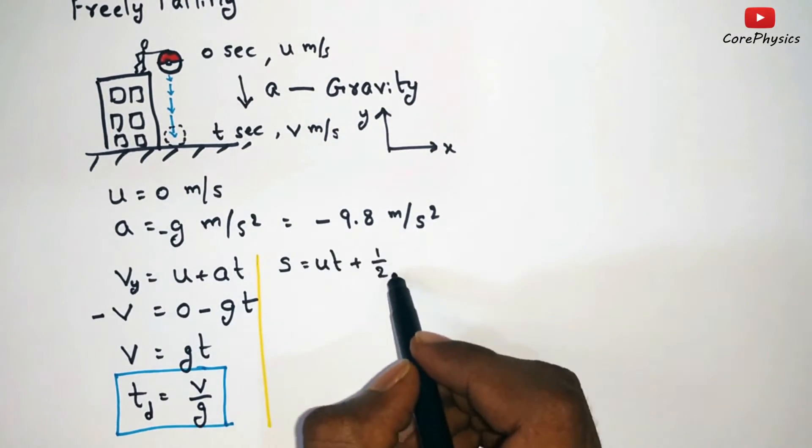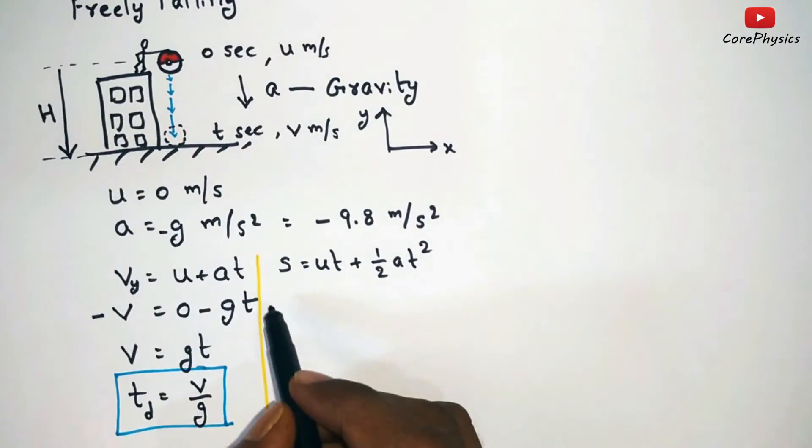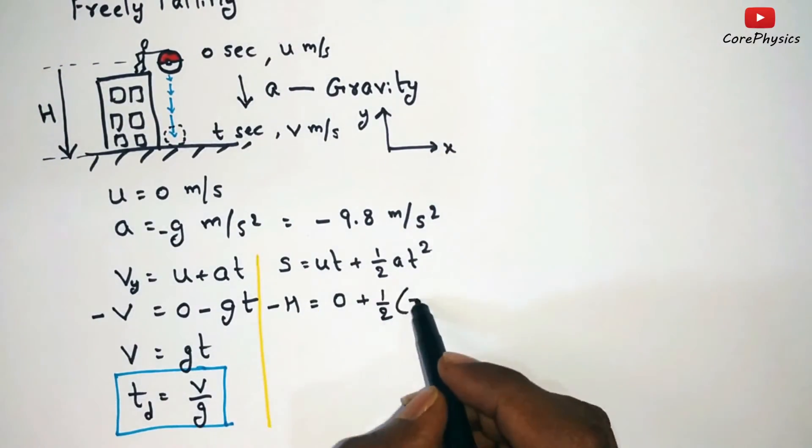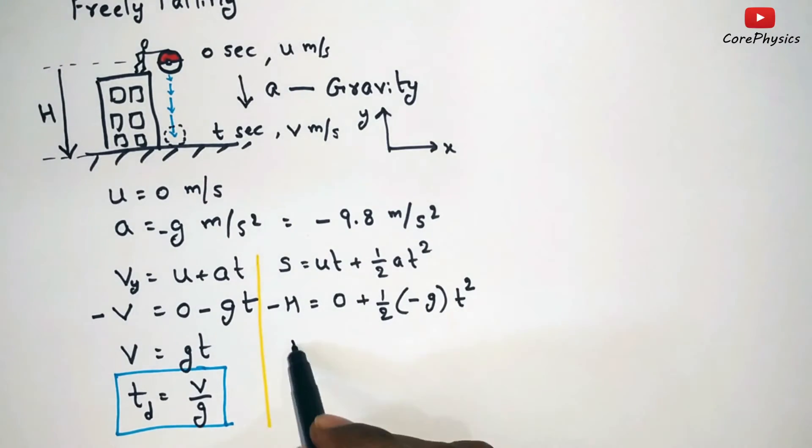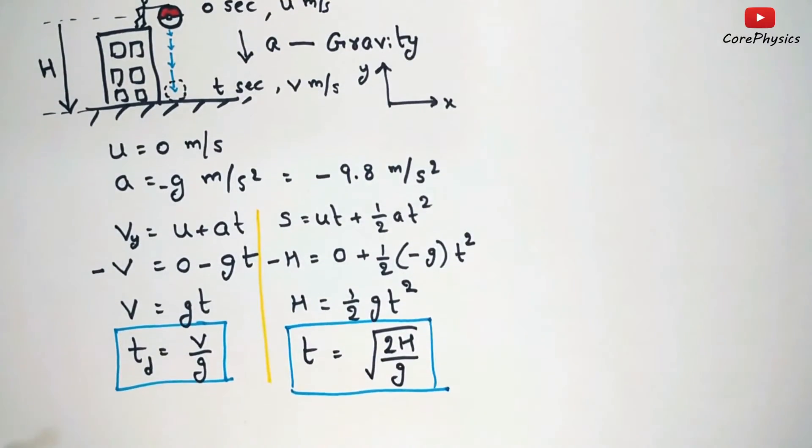Now take the second equation. Here displacement is equal to the height of the building and its direction is along negative y-axis. So s is equal to minus h and we can find the value of h as half gt square from which we can find the time of descent as root of 2h by g. And from these two equations we can find that v equal to root of 2gh.